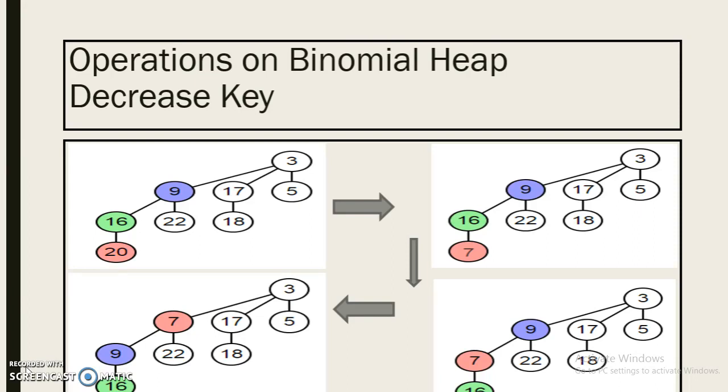Here we are taking this node 20 and we will replace this 20 with the value 7. Now 7 is smaller than 60, so they will swap. Now 7 is smaller than 9 too, so both will swap again.